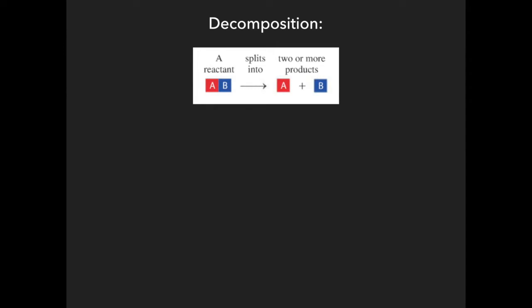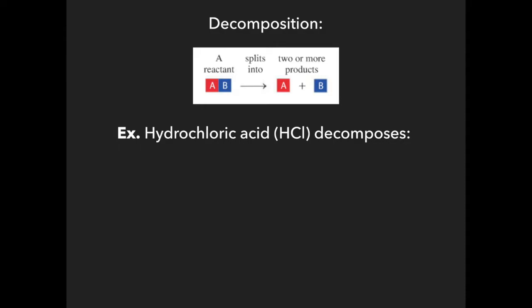Decomposition reactions are the exact opposite of synthesis. You have one reactant that splits apart into two individual products. For example, hydrochloric acid — HCl — decomposes into hydrogen and chlorine. Both hydrogen and chlorine are diatomic, so the products are H₂ plus Cl₂. To balance, put a two in front of HCl, and you're done.